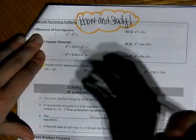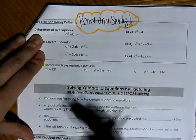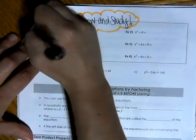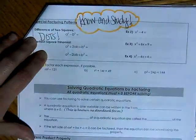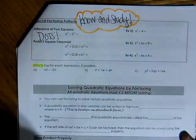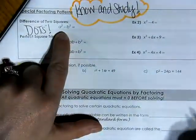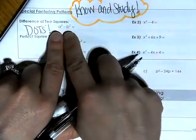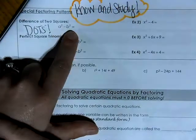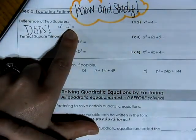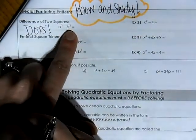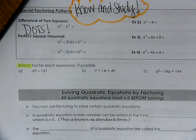The first one is called difference of two squares — in my class we call that DOTS. I'll say, oh, that's a DOTS, a difference of two squares. What you're going to see is a binomial where the first term and the last term are perfect square values and they are being subtracted from each other.